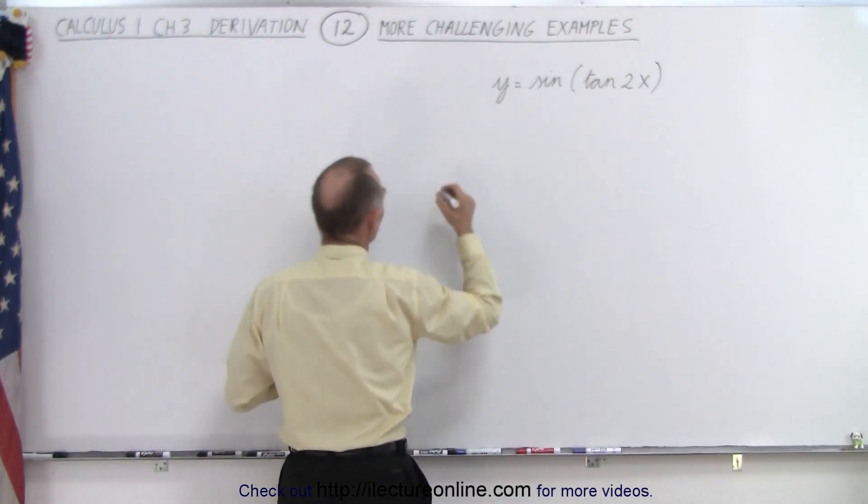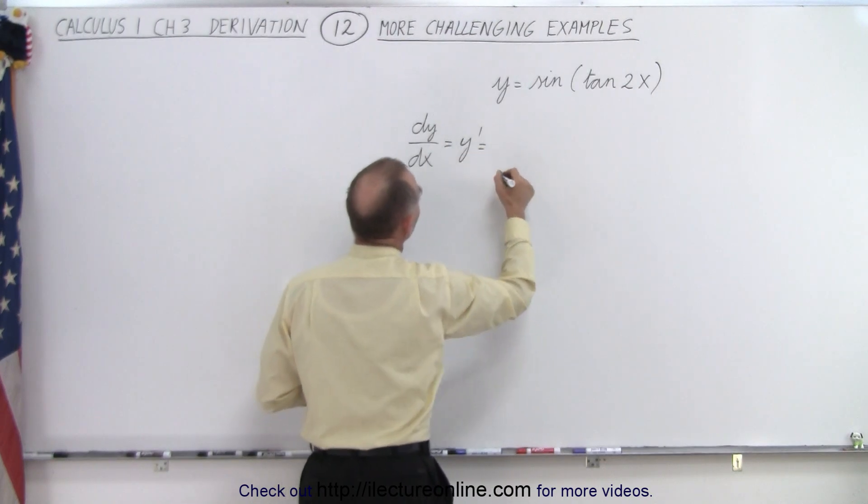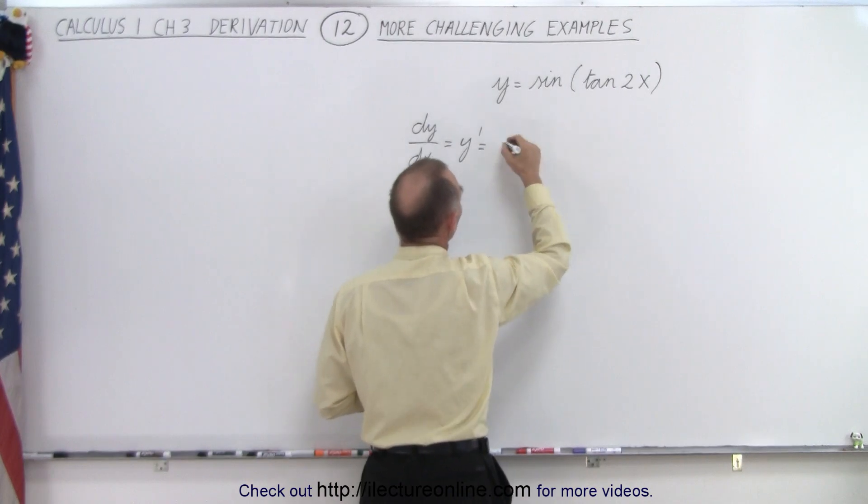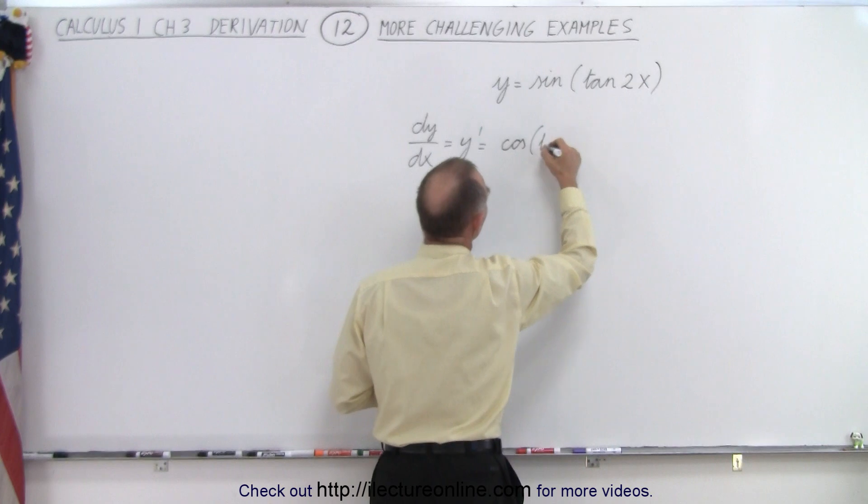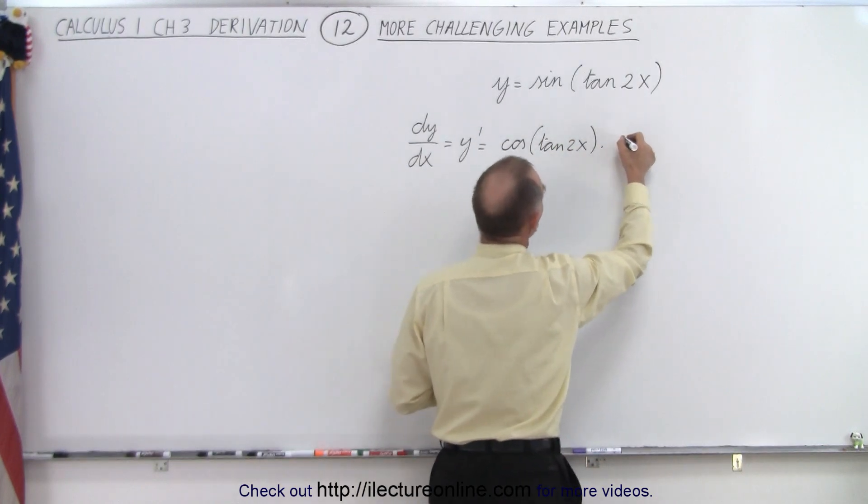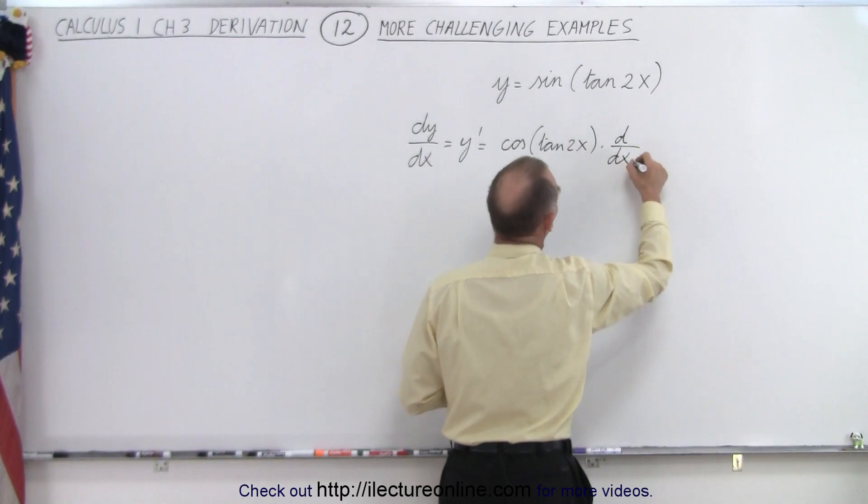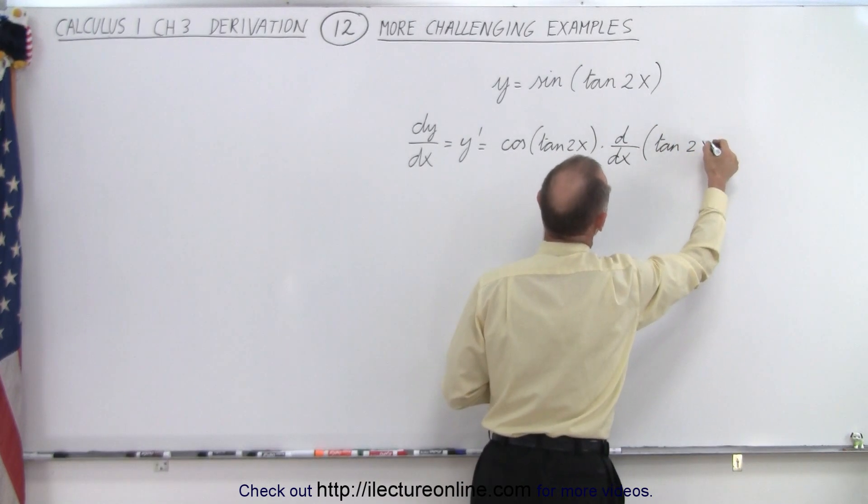And the way this works is that the derivative dy/dx, which can also be written as y prime, is equal to the derivative of the sine is the cosine. So you write the cosine of the angle, tangent of 2x, times the derivative d/dx of the angle, the tangent of 2x.